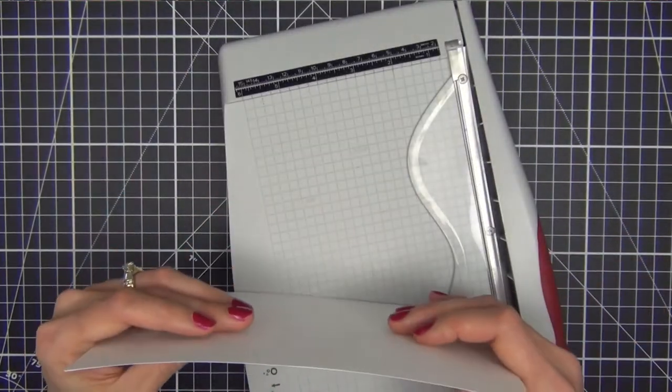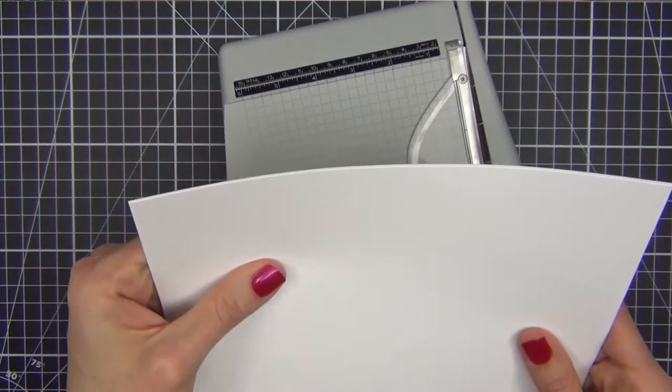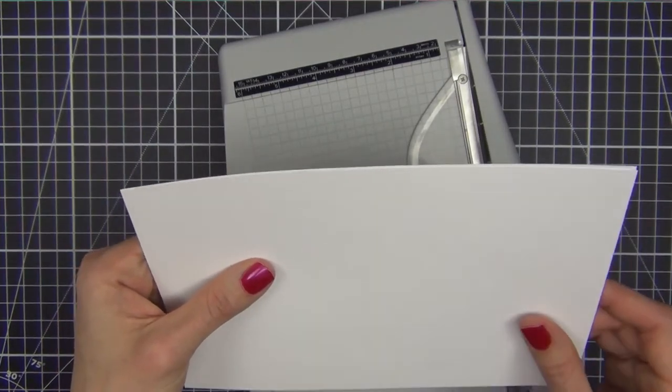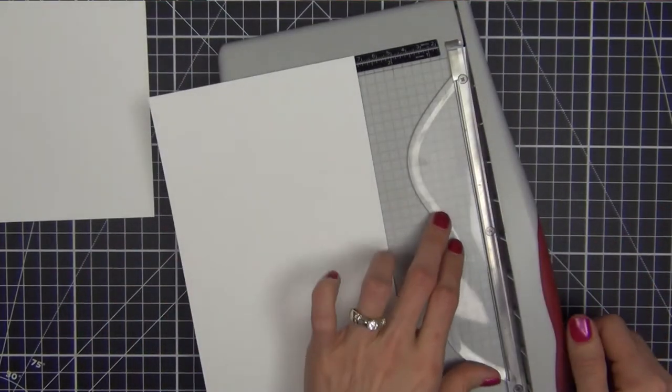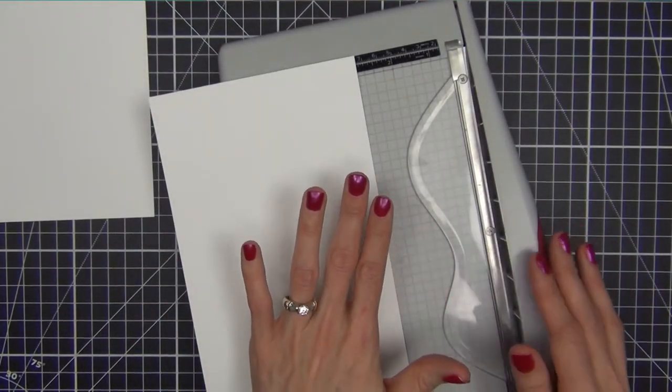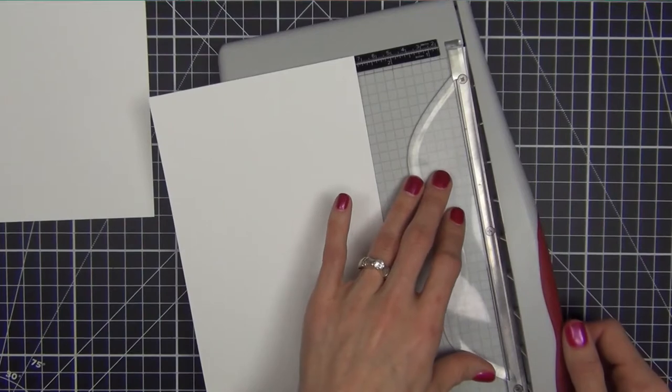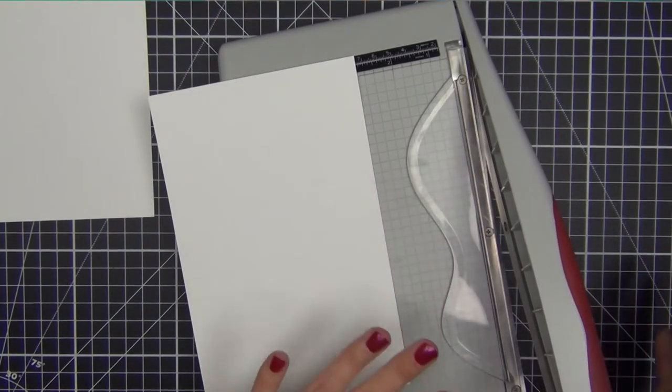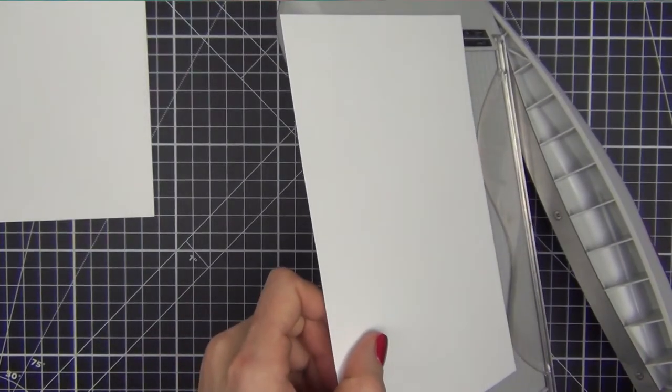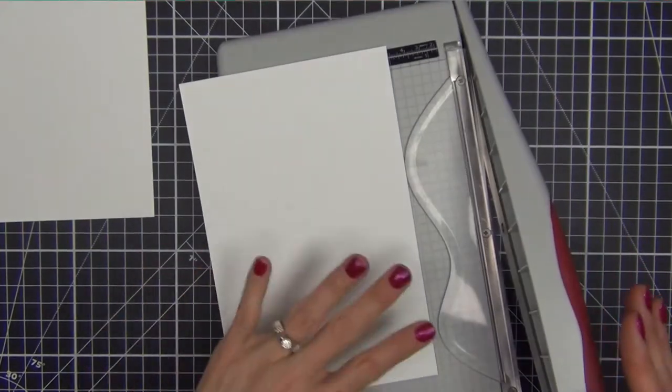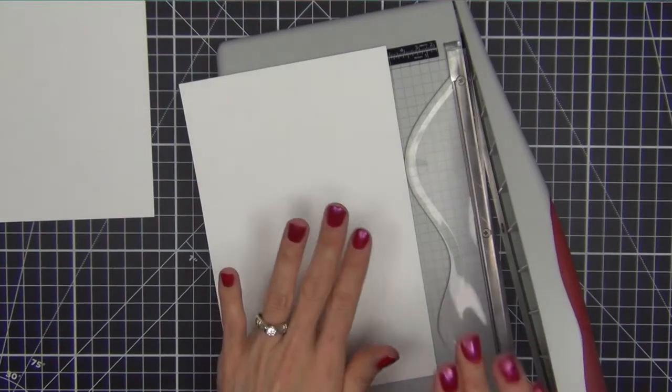So what I do is I take the piece that we cut that's the perfect size and set the other one aside. And then take the trimmer and you lift up the blade partially. You don't want to lift it up all the way. You want to make sure that it's only partially lifted. And you want to make sure that you don't get your fingers under there. Be careful. Don't bump it.